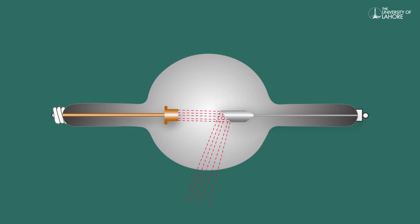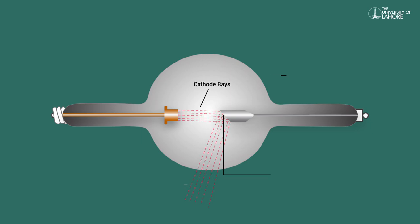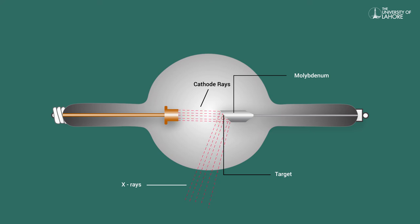When a voltage is produced across the electrodes, the cathode rays are emitted and they hit the target material, which is made up of molybdenum. In this way, X-rays are produced, which are invisible.